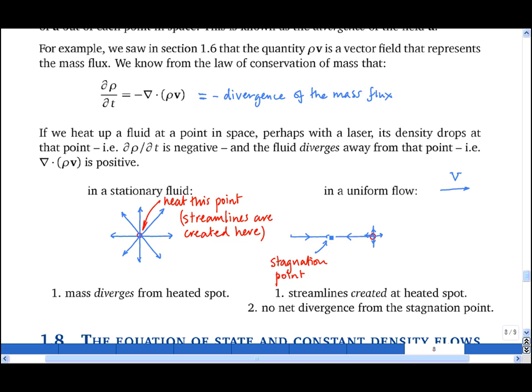At the stagnation point itself, there is no divergence. You'll notice that fluid is moving in along two directions and moving out along two other directions. But around the point that we're heating, there is net divergence.